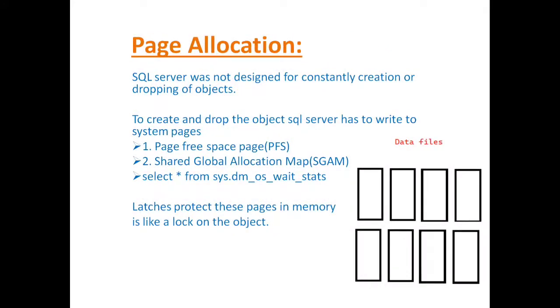When any object is dropped or created, it updates the page free space, that is the system pages. For example, if any inserts are going on and it needs to allocate the data files, it will check in the PFS that the page is available for allocation or not. Again it checks the shared global allocation maps and where those pages are located, and based on that it allocates the pages. What happens if there is a single file in the tempdb? Each and every time it has to go to the PFS and SGAM for allocating the pages and it keeps lightweight locks on the pages.